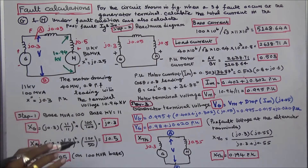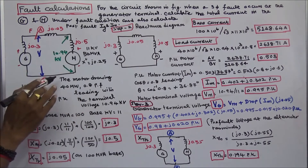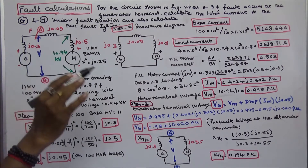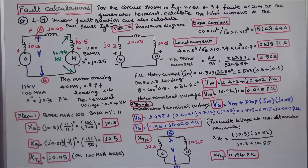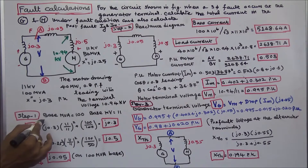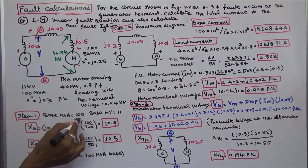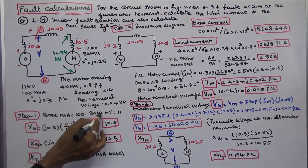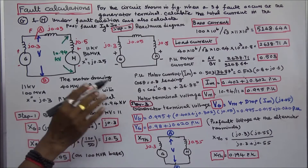First step: we choose base MVA and base KV. Base MVA is equal to 100, base KV is equal to 11.